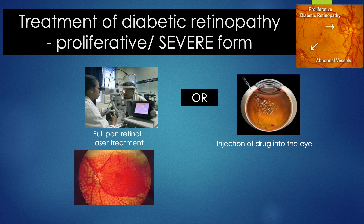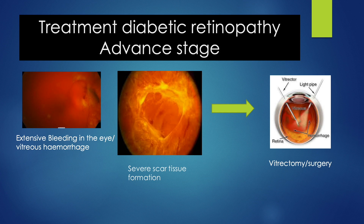What are the treatment options for patients with diabetic retinopathy? Treatment can range from regular monitoring to laser treatment. Sometimes we offer injection of anti-VEGF into the eye. Lastly, if the condition is very severe, we might offer the patient surgery.